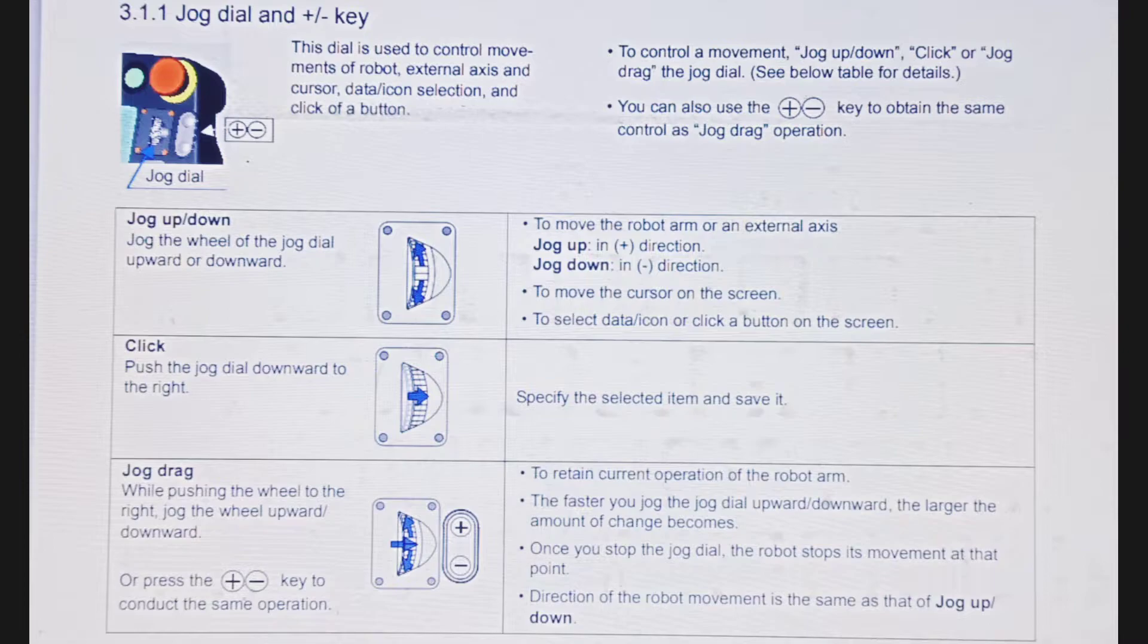Once you stop the jog dial, the robot stops its movement at that point. The direction of the robot movement is the same as that of jog up/down.